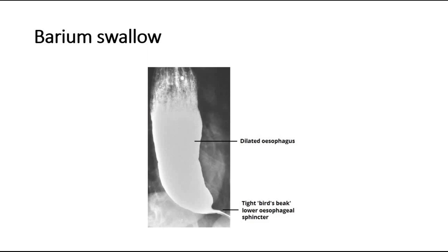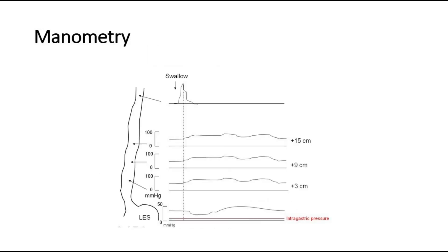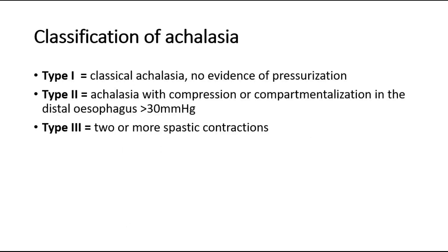This is an example of the manometry finding, demonstrating aperistaltic contractions, increased intraesophageal pressure, and failure of relaxation of the lower esophageal sphincter. High-resolution manometry is increasingly being used to provide more detailed information on esophageal motility, and can provide a subclassification of achalasia into three groups based on the pattern of contractility in the esophageal body.